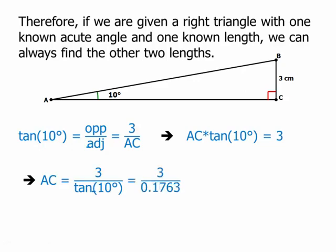Now, we can find this in our calculator. Tan 10 is about 0.1763. 3 divided by that number is about 17.0.